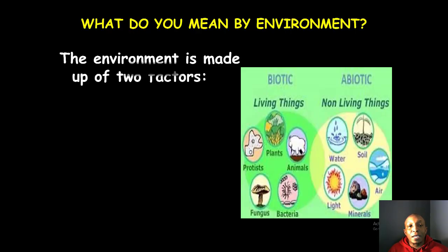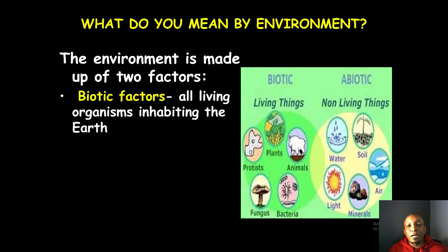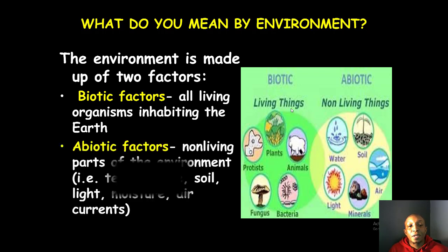What do we mean by the environment? The environment is made up of two factors. First, we have biotic factors, which are all living organisms inhabiting the earth — for example, plants, animals, bacteria, fungus, and protists. In order to be considered living, they must have the characteristics of living things.